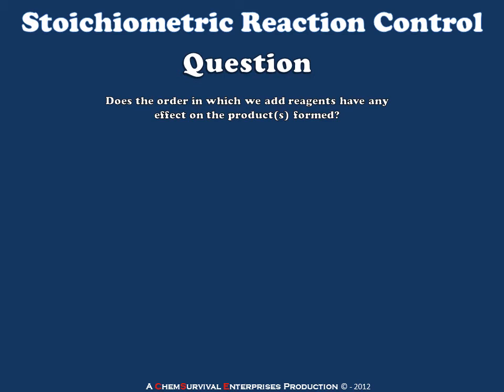This video is intended to discuss some of the underlying principles behind the idea of stoichiometric reaction control, and how to cope with reactions that have non-stoichiometric ratios of reagents. Let's begin by asking ourselves a question: does it matter whether we add A to B or B to A when we are conducting a reaction in a lab?